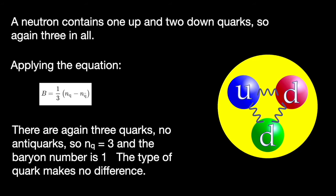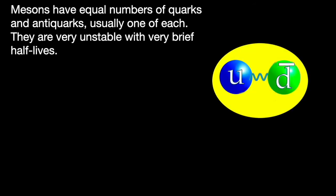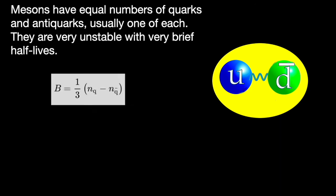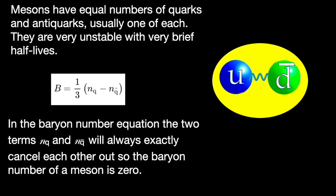For the last example we'll take a meson. Mesons have equal number of quarks and anti-quarks. Usually one of each. They are extremely unstable. They have a very short half life. If we put these numbers in the equation NQ is one. NQ bar is also one. So one minus one is zero. And a third of zero is still zero.